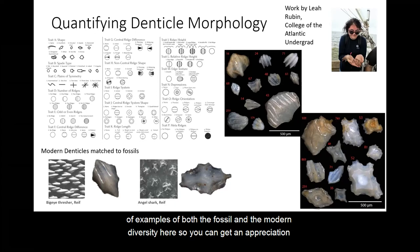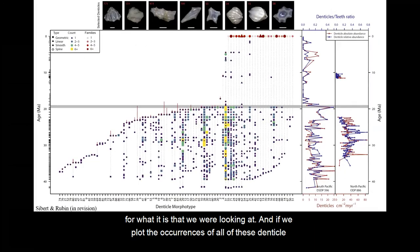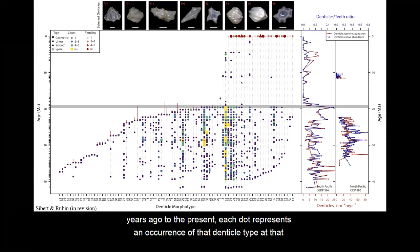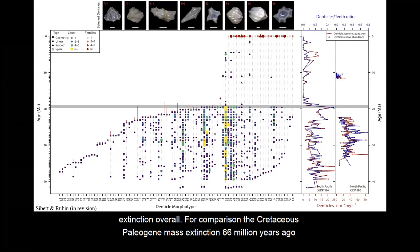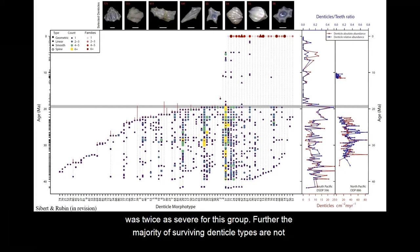Leah and I did some paleontology magic and divided up the fossil denticles into 88 unique denticle types, then went through the literature of modern shark skin diversity and tried to match these fossils with modern sharks. If we plot the occurrences of all of these denticle types through time — denticle types on the x-axis, time on the y-axis from 40 million years ago to the present, with each dot representing an occurrence at a specific moment in time — we find that there was, in fact, a major rapid extinction in shark denticle morphotype diversity right around 19 million years ago. It's associated with a 90% reduction in observed morphotype diversity in the open ocean fossil record and about a 70% extinction overall. For comparison, the Cretaceous-Paleogene mass extinction 66 million years ago was associated with only about a 30% extinction in sharks, so whatever happened here was twice as severe for this group.